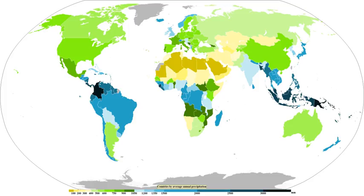The standard way of measuring rainfall or snowfall is the standard rain gauge, which can be found in 100 mm plastic and 200 mm metal varieties. The inner cylinder is filled by 25 mm of rain, with overflow flowing into the outer cylinder. Plastic gauges have markings on the inner cylinder down to 0.25 mm resolution, while metal gauges require use of a stick designed with the appropriate 0.25 mm markings. After the inner cylinder is filled, the amount inside it is discarded, then filled with the remaining rainfall in the outer cylinder until all the fluid is gone, adding to the overall total. These gauges are used in the winter by removing the funnel and inner cylinder and allowing snow and freezing rain to collect inside the outer cylinder. Some add anti-freeze to their gauge so they do not have to melt the snow or ice that falls into the gauge.